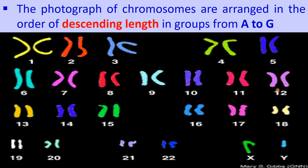The D group consists of the 13th, 14th, and 15th pairs. The E group consists of the 16th, 17th, and 18th pairs. The F group consists of the 19th and 20th pairs. The G group consists of the 21st and 22nd pairs, and also includes the Y chromosome. With this, the topic of karyotyping is complete.